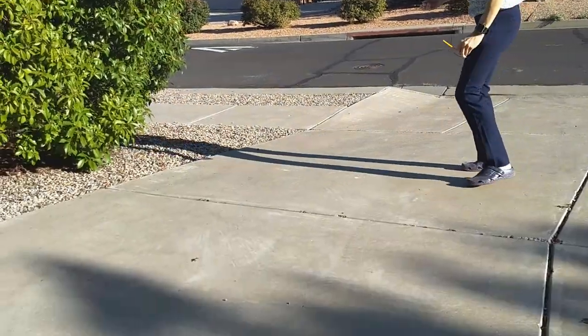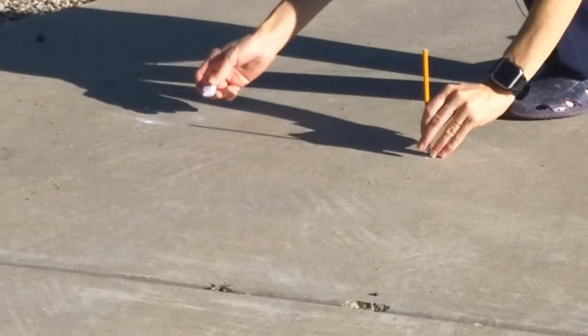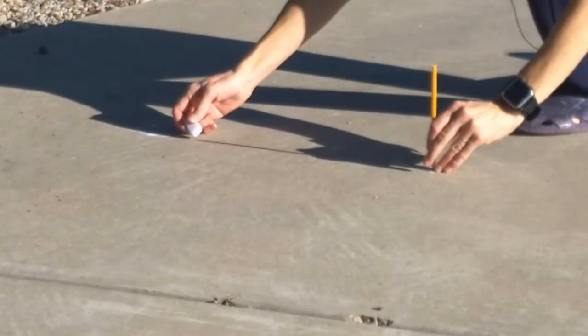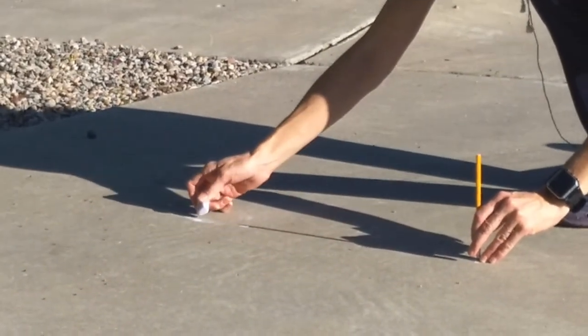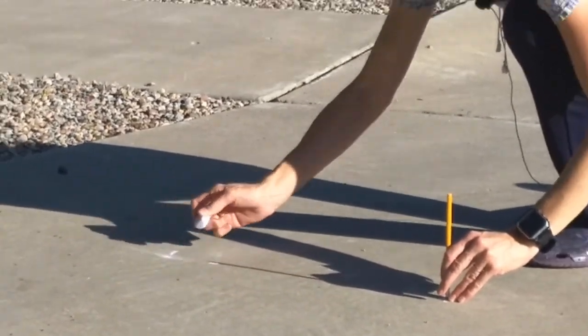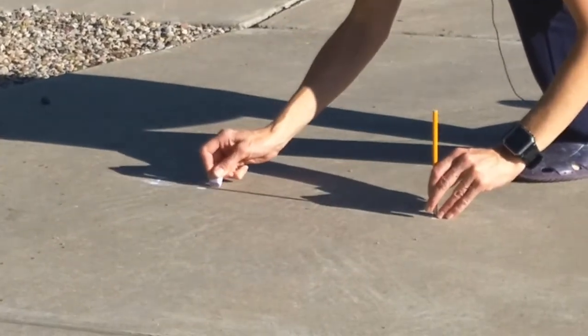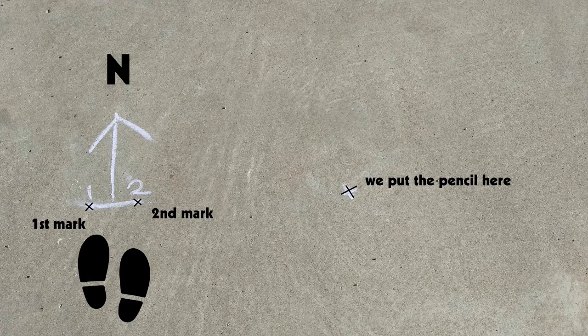It's been about 15 minutes. Let's see how our shadow has moved. Put this in the same spot, and look right there. Now we have our first mark that we made earlier and our second mark that we just made. If we stand so that we're facing our two marks, that way is going to be north.